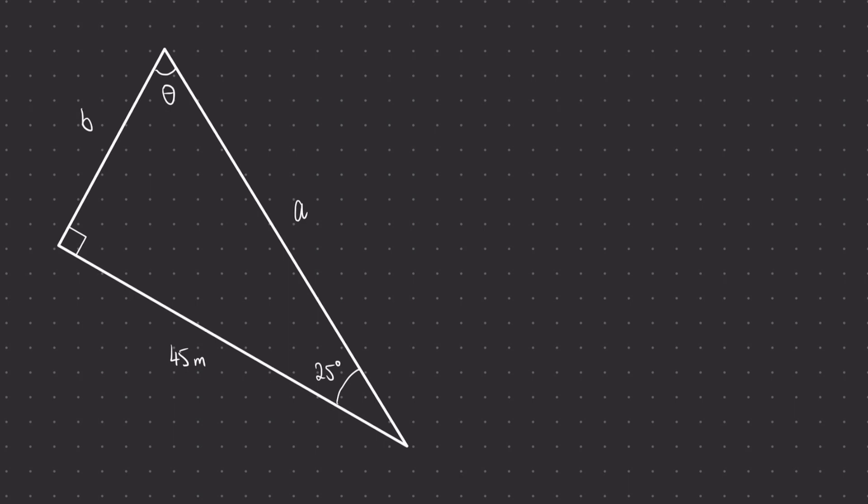We're going to need to label our right angle triangle. We're going to start by labelling the hypotenuse, so let's look for the right angle, and the side opposite that is going to be a. Then we're going to find the adjacent, in this case is 45, that's next to the 25 degrees, so let's label that capital A.